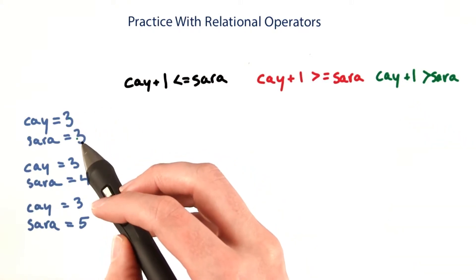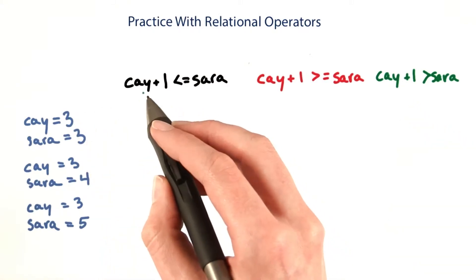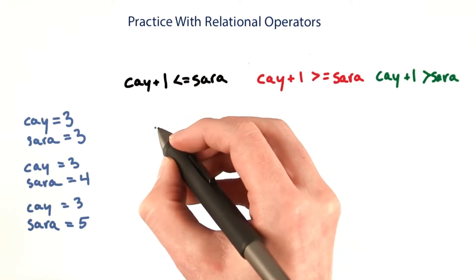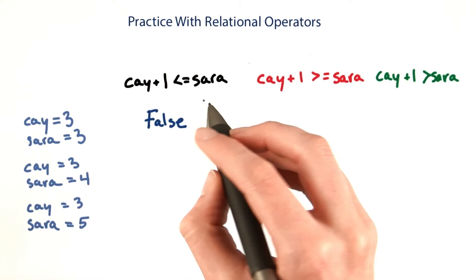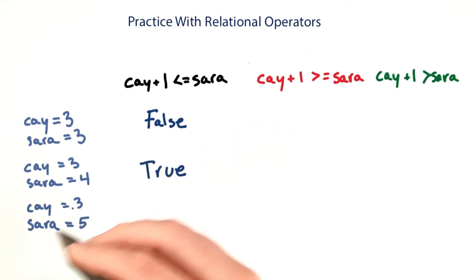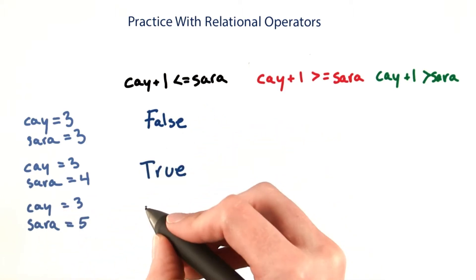When chi has 3 and Sarah has 3, it's not true that chi plus 1 is less than or equal to Sarah. When chi has 3 and Sarah has 4, this condition is true. When chi has 3 and Sarah has 5, the condition is still true.